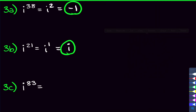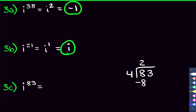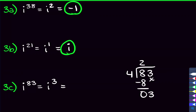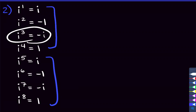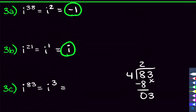For problem 3c, i to the 83rd power: 83 divided by 4. 4 goes into 8 twice, subtract 8, bring down 3. 4 doesn't go into 3, so the remainder is 3. That means i to the 83rd is the same as i to the third, which is negative i.